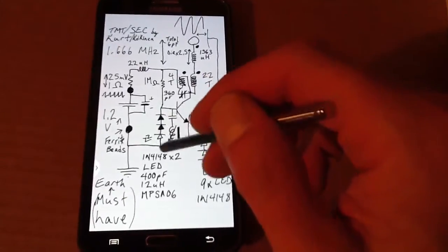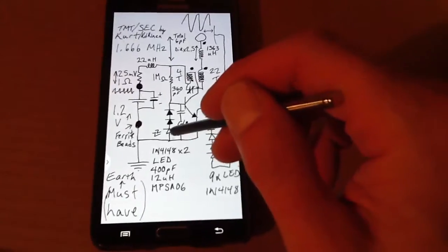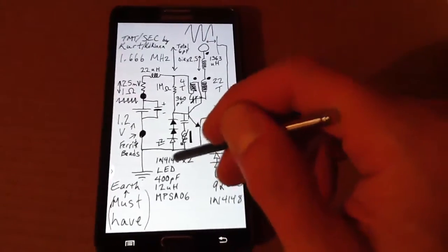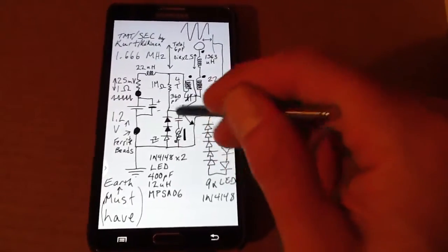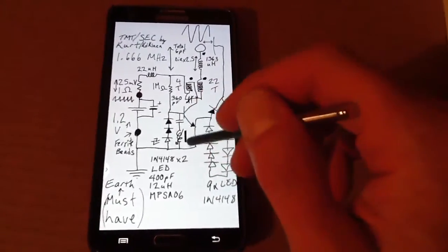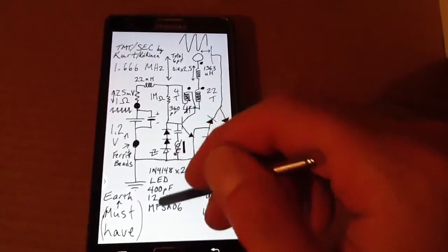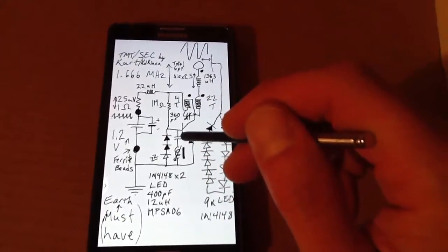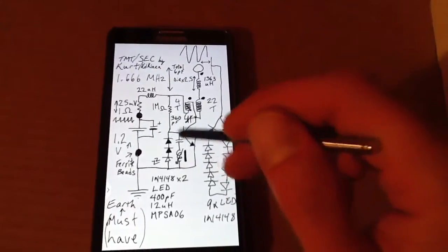And this is the emitter base feedback I was talking about. So there's an LED with two 1N4148 diodes going to the base. And then also parallel to that I've got that 12 microhenry coil with the 400 picofarads in series. And that's also doing this.